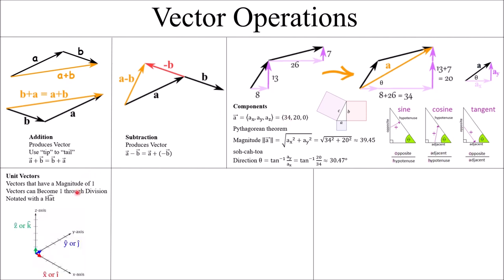Unit vectors are a simple way of giving us a direction. Vectors with a magnitude of 1 are called unit vectors — they don't affect the magnitude because they have a magnitude of 1. We notate them with a hat symbol. Common ones are x-hat or i-hat for the x-axis, y-hat or j-hat for the y-axis, and z-hat or k-hat for the z-axis. You can multiply a unit vector by any number to extend the magnitude in that particular direction.